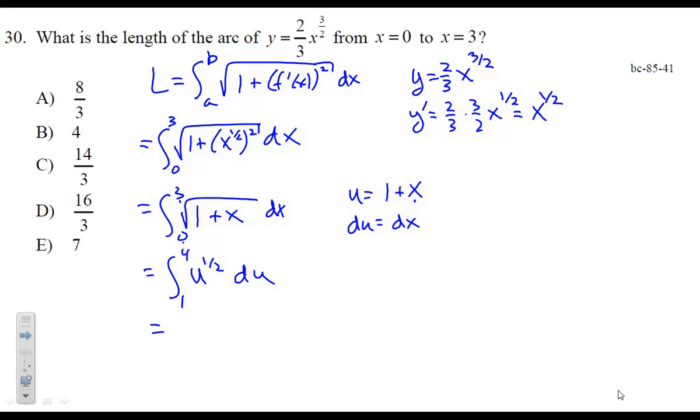Now the antiderivative: add one, reciprocal, as we go from one to four. This equals two-thirds times four to the three-halves power minus two-thirds times one to the three-halves power.